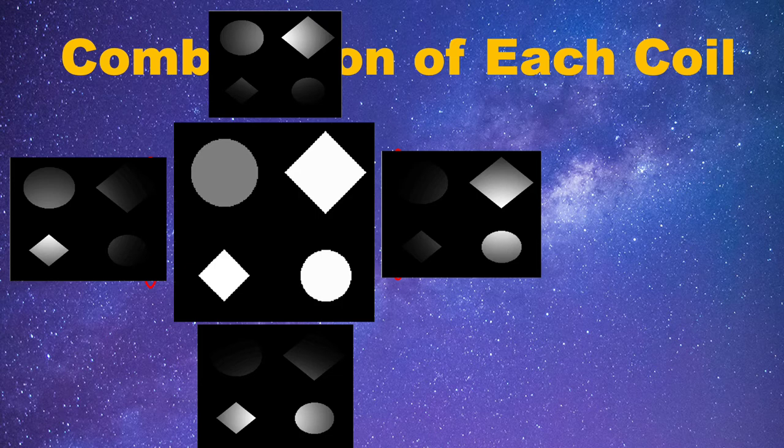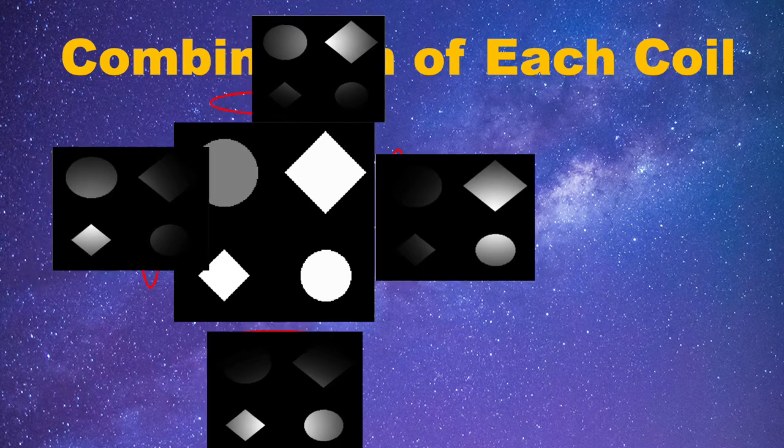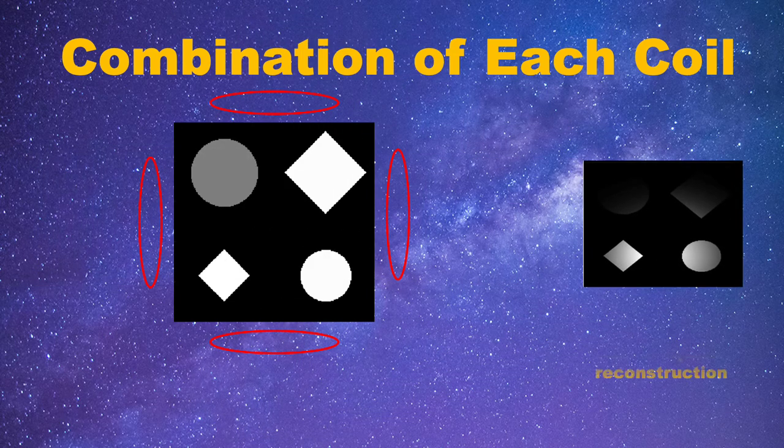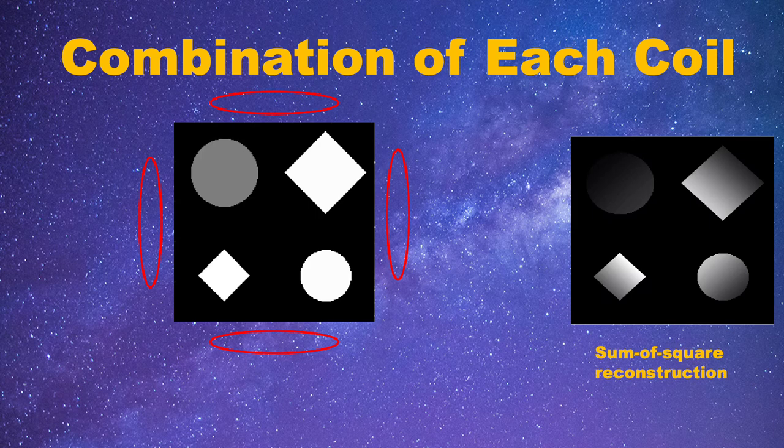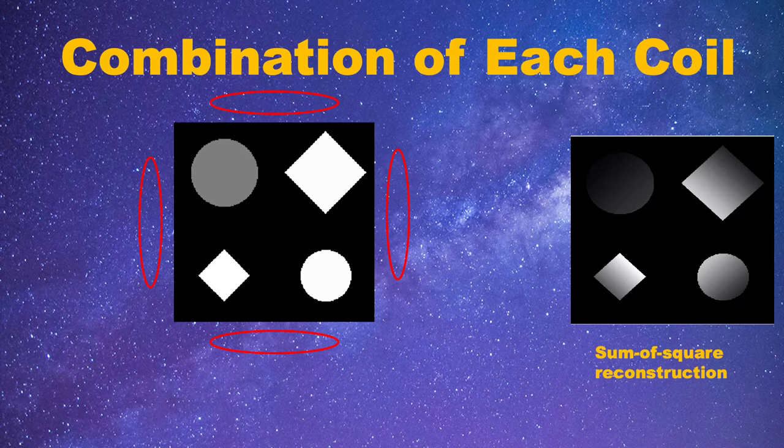Although each of the images show the complete object, we still want to combine them to get an image that better represent the object. There are many ways to do the combination. The easiest way is called sum of squares, which means adding together the squares of the coil images. This is a commonly used combination method in the real scanners.